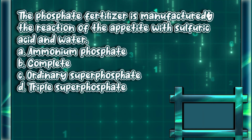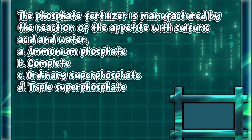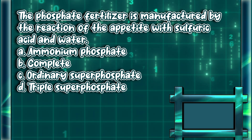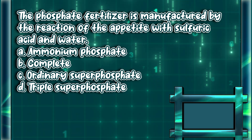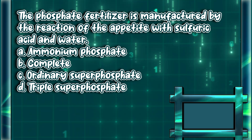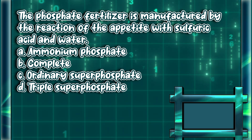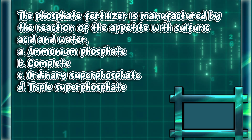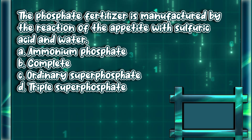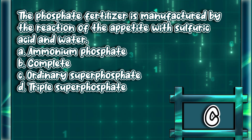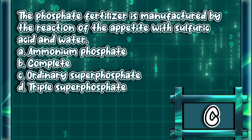The phosphate fertilizer is manufactured by the reaction of the apatite with sulfuric acid and water. A. Ammonium phosphate. B. Complete. C. Ordinary superphosphate. D. Triple superphosphate. The answer is letter C.